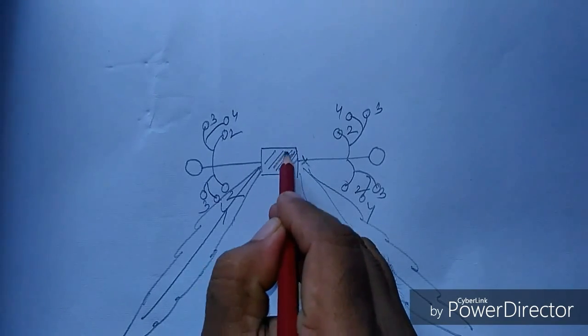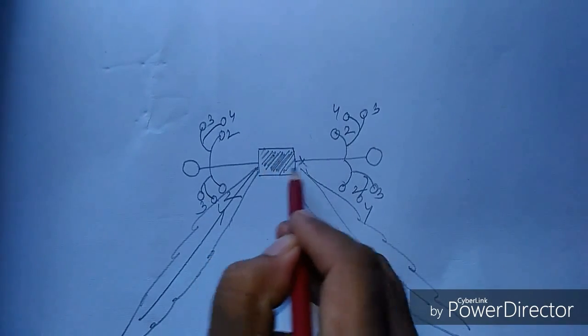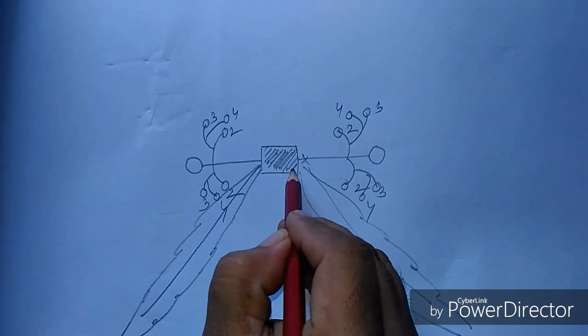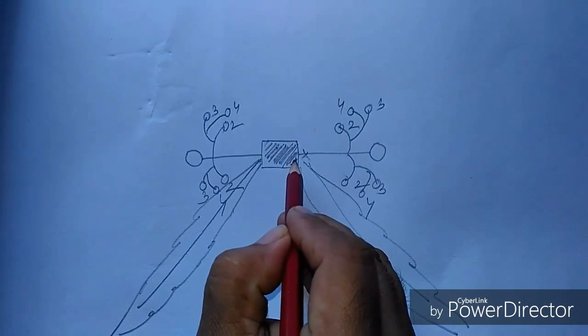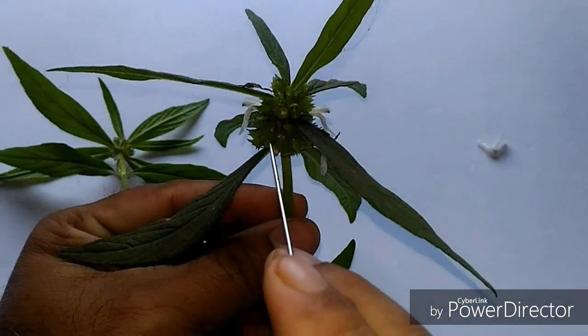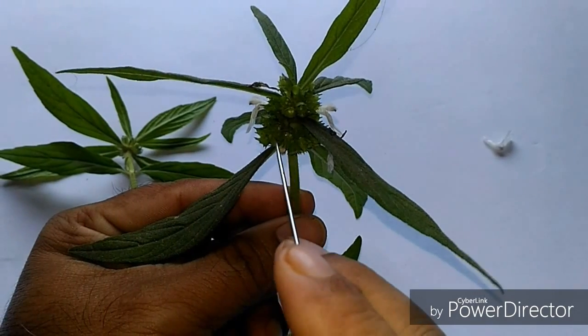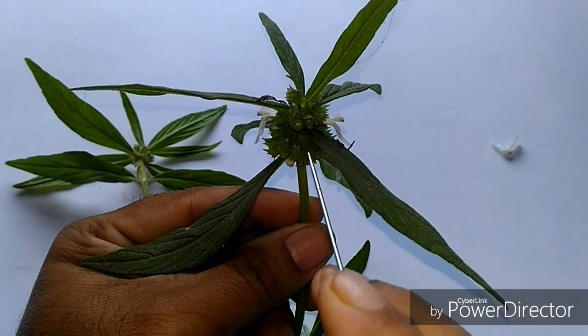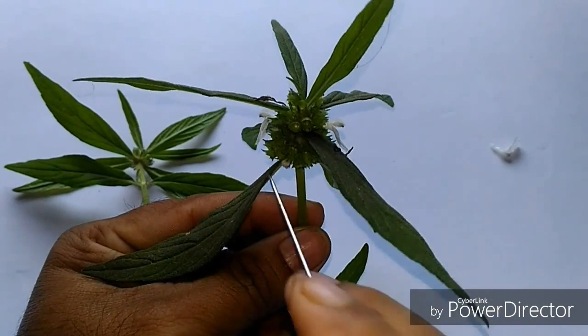It is a special kind of inflorescence and it is termed as verticillaster. Presence of verticillaster is a special identifying feature of this family. Such a verticillaster inflorescence is present in the axils of the foliage leaves.